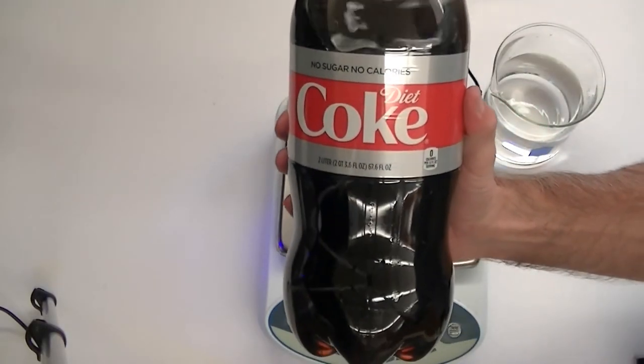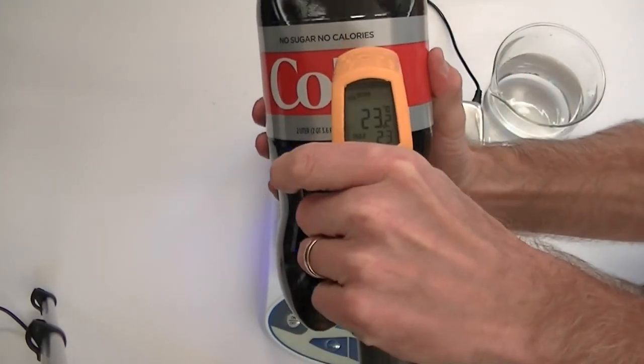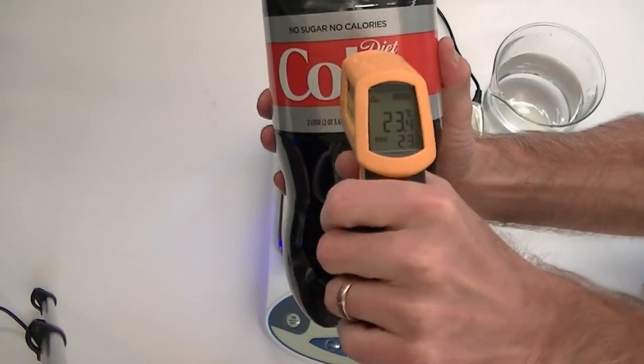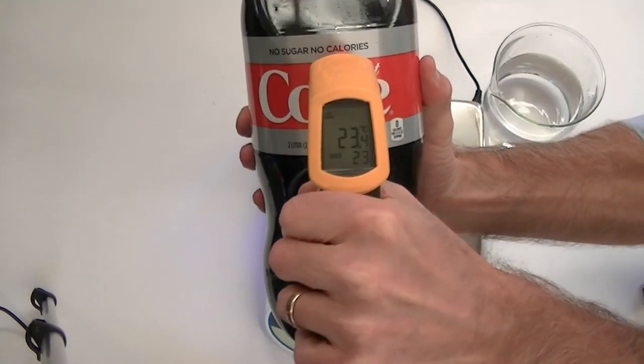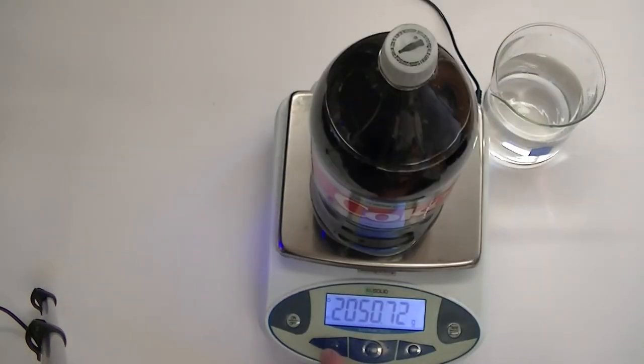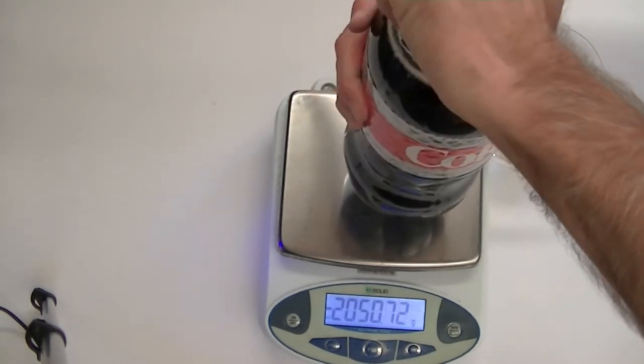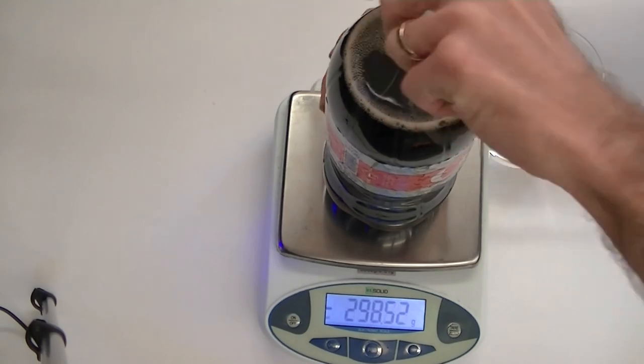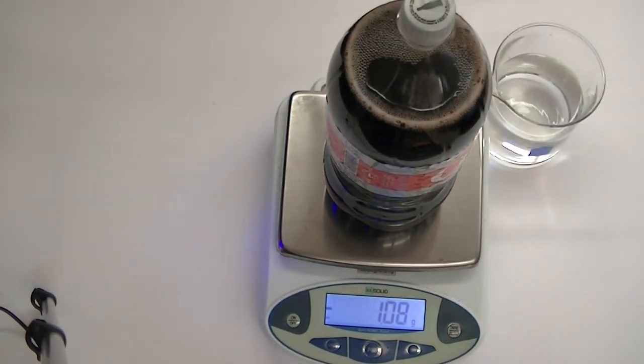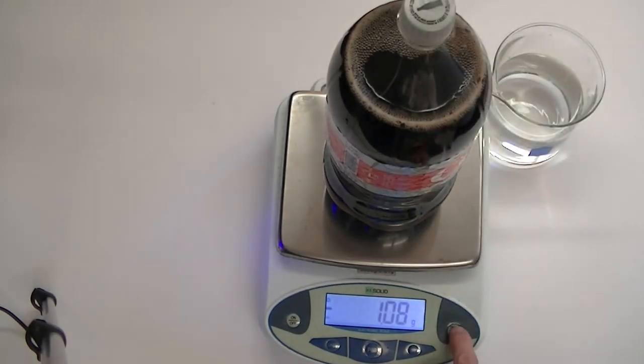Hey, let's see what the pressure is inside a 2.0 liter bottle of soda. First, let's find the temperature. Looks like it's about 23.4 degrees Celsius. Now we'll place the soda on the balance and zero it out. Okay, let's let the gas out. Looks like 1.08 grams of carbon dioxide escaped.